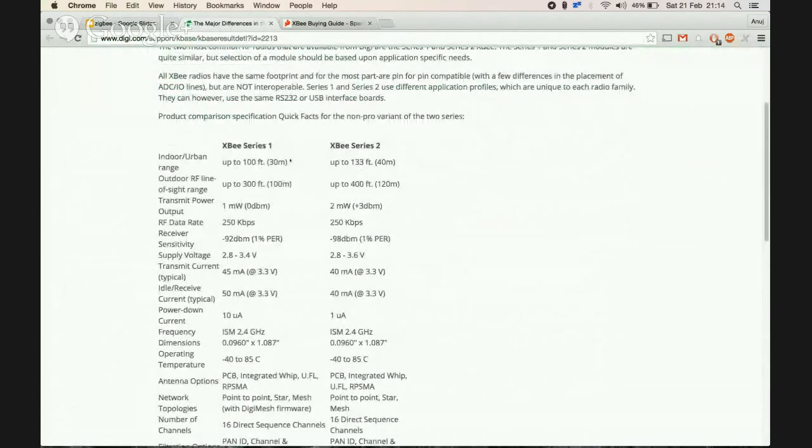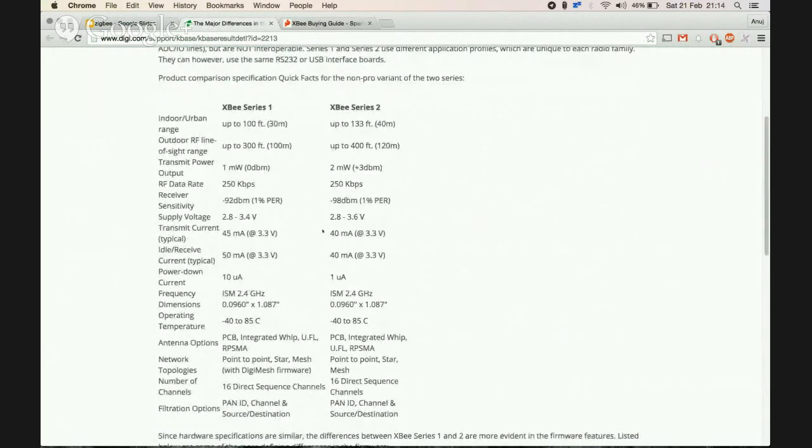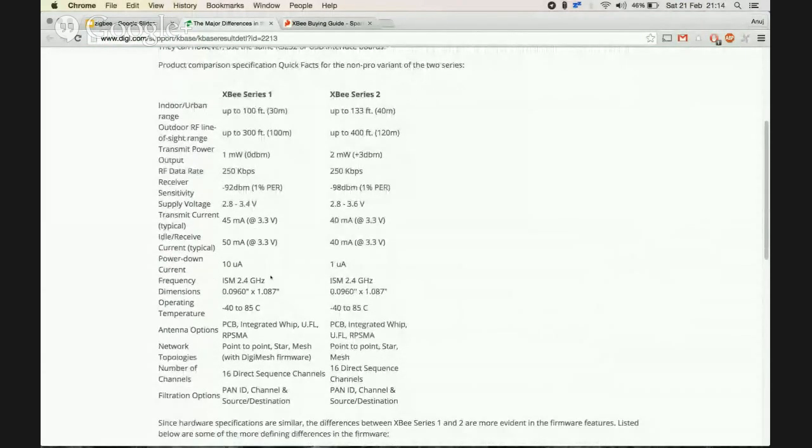Let's look at this other link that tells you the major differences between Series 1 and Series 2. There are range differences—100, 133 feet—and as you go to the Pro module, you get a better range. A key fact to note is Series 1 and Series 2 work on different protocols, therefore they will not be able to communicate with each other. If you have a Series 1 network, a Series 2 node cannot be added into it.